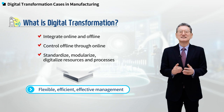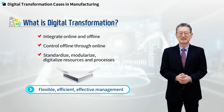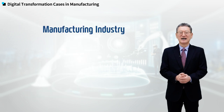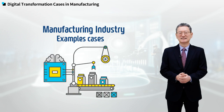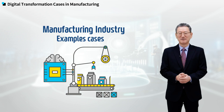When we say digital transformation as a process, it can be the process of converting analog to digital. Now, let's look at examples of the impact of digital transformation in the manufacturing industry.